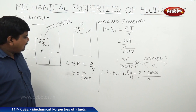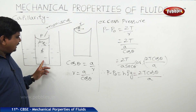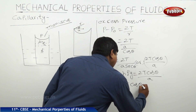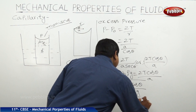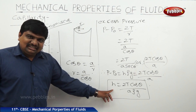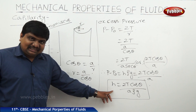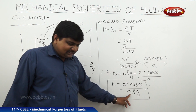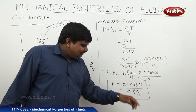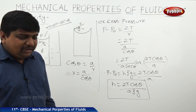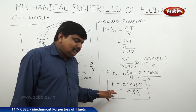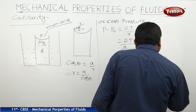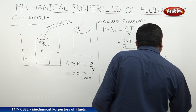To find the height reached by water through a capillary section: H equals 2T cos theta divided by A rho g. The height is directly proportional to surface tension, and inversely proportional to the radius of the capillary section, the density, and the acceleration due to gravity. More density means less height; less density means more height. This expression can also be written as H equals 2T divided by (sec theta times A rho g).